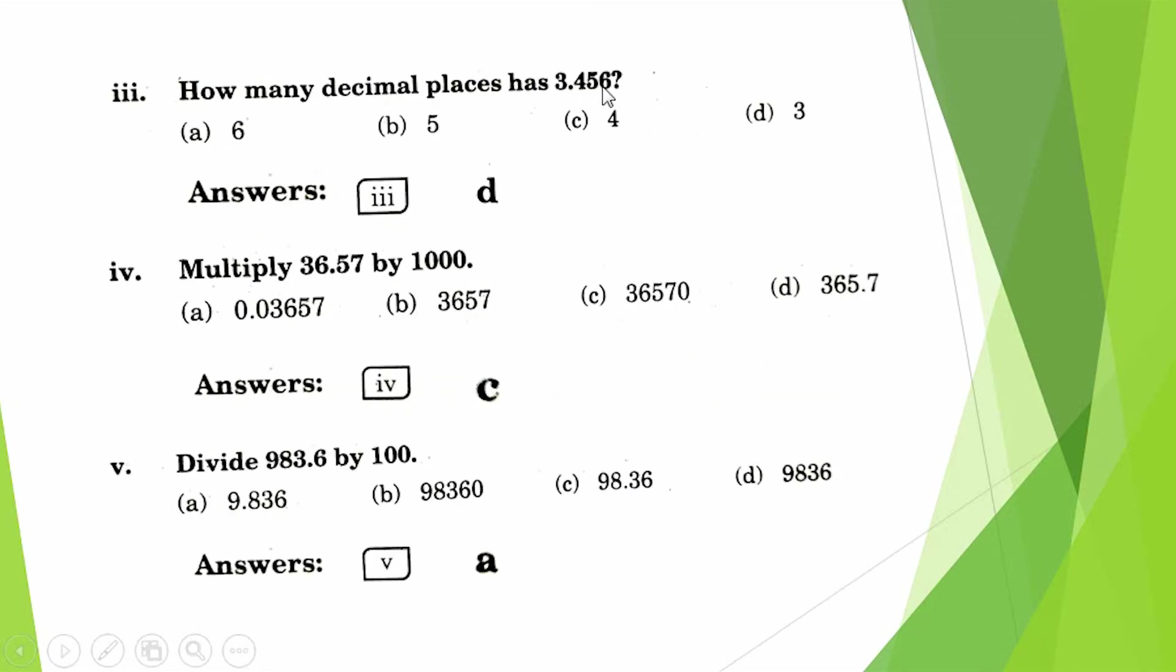How many decimal places has this value? 1, 2, 3 - three decimal places. Answer is D. Multiply 36.57 by 1000. When we multiply, the decimal point will change three right places. Therefore 36,570. Answer will be C.